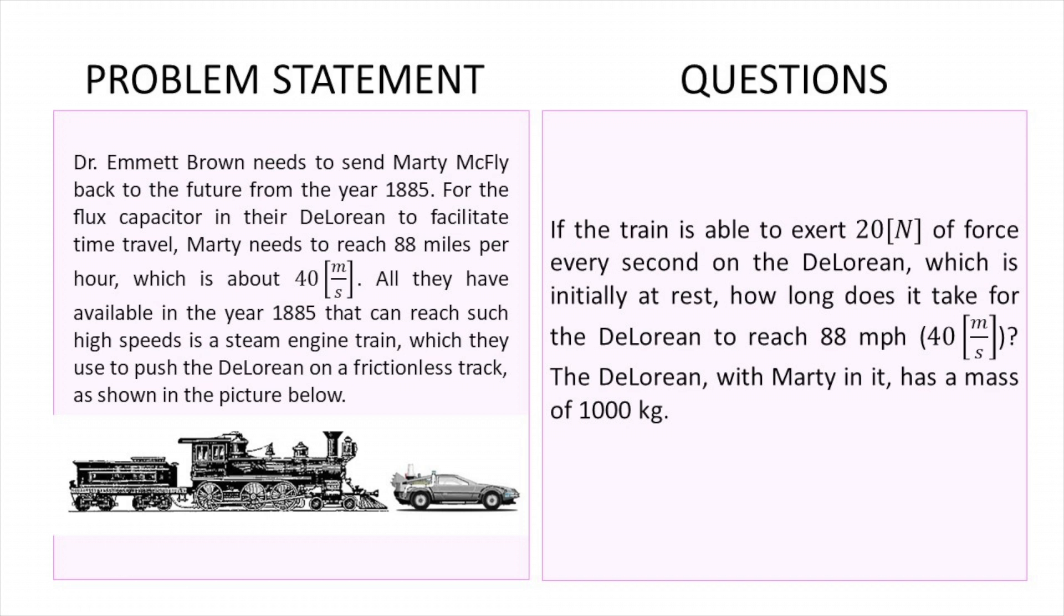This is going to be part one of a two video series on this Back to the Future problem. The first part states you have Dr. Brown and he wants to send Marty McFly back to the future from the year 1885. For this to work, Marty basically needs to reach a final velocity of about 40 meters per second. All that they have available in the year 1885 is some sort of train which they use to push the DeLorean on a frictionless track.